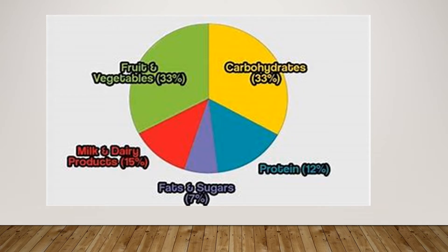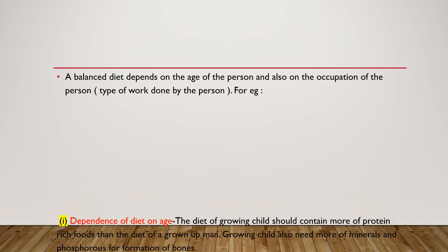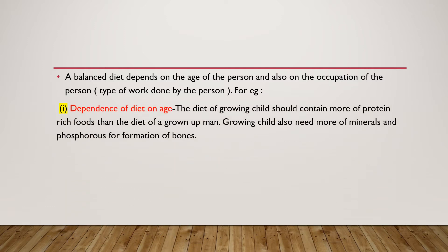However, a balanced diet depends upon the age and occupation of the person. For example, the diet of a growing child should contain more protein-rich food than the diet of a grown-up man.